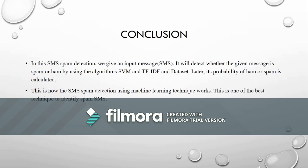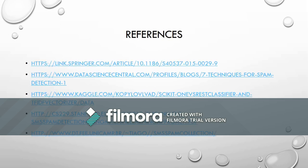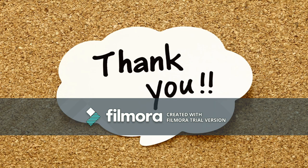In conclusion, in this SMS spam detection project, we have given an input message and calculated whether it is spam or not. We have also calculated the prediction probability of the message. This is how SMS spam detection using machine learning technique works, and this is one of the best techniques to identify whether a received message is spam or not. The output of the code is a spam source. My friend Lalith will be explaining the code and how it works.